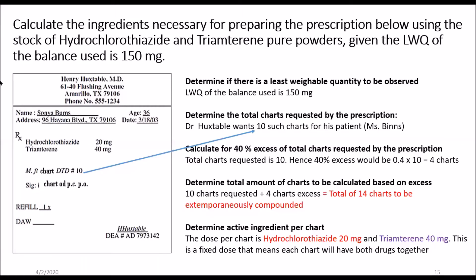So we have this prescription and we are going to examine it. We recognize that there are two ingredients: hydrochlorothiazide and triamterene. Both are diuretics used for hypertension, so the chart being made is a fixed-dose combination product. This means the dose of each active ingredient is fixed per chart: 20 milligrams of hydrochlorothiazide and 40 milligrams of triamterene per chart.